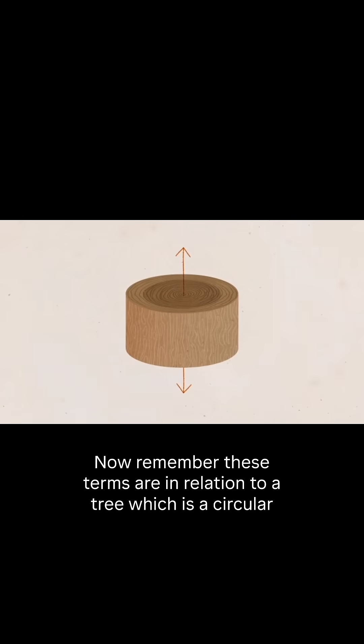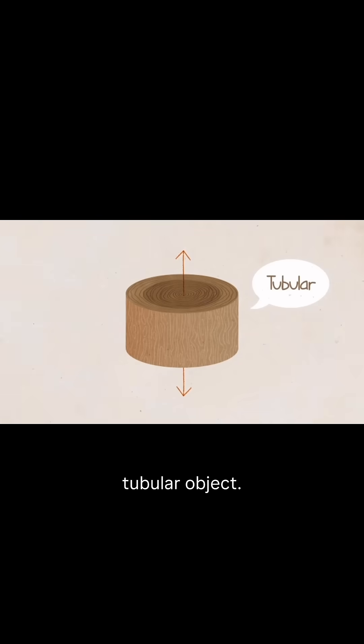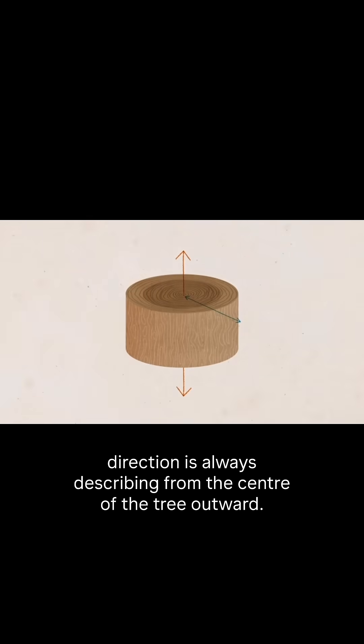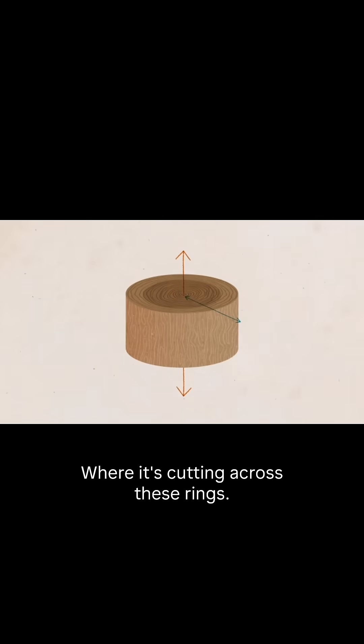Now remember, these terms are in relation to a tree, which is a circular tubular object. So while the longitudinal direction is pretty straightforward, the radial direction is always describing from the center of the tree outward, where it's cutting across these rings.